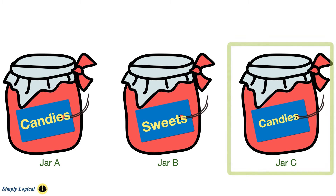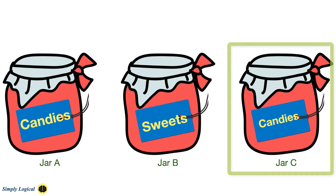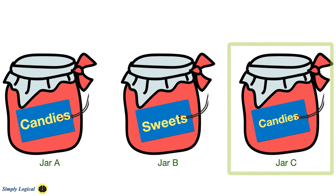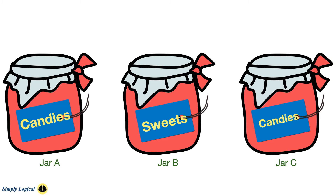Let me explain how. Since jar C has candies only, jar B can contain sweets or mixture. But jar B can contain only the mixture, because its label reads sweets, which is wrong. Therefore, jar A must contain sweets.